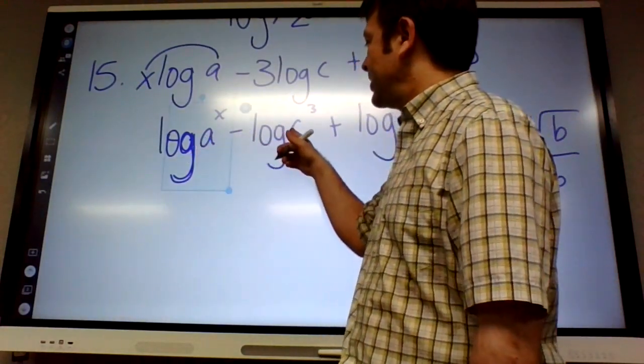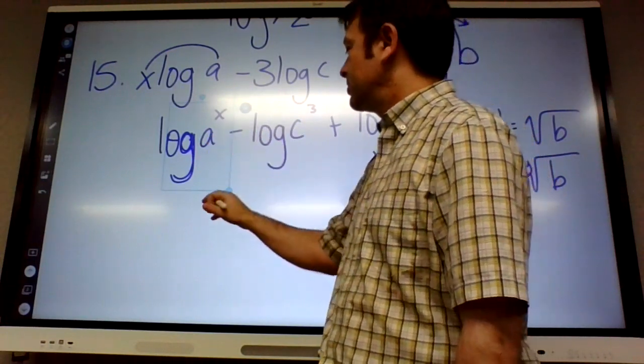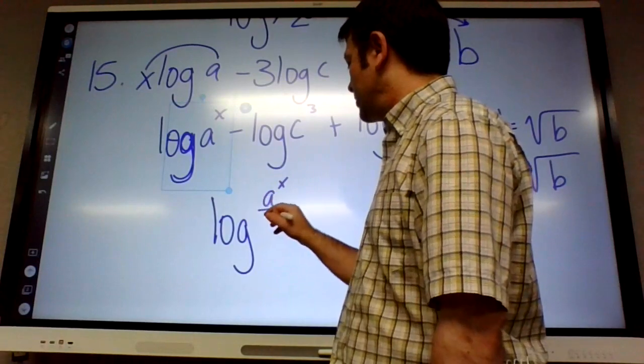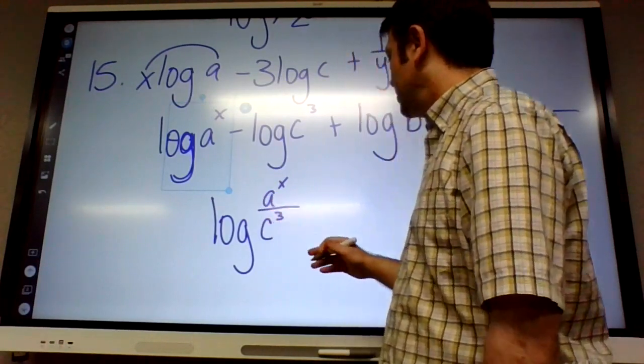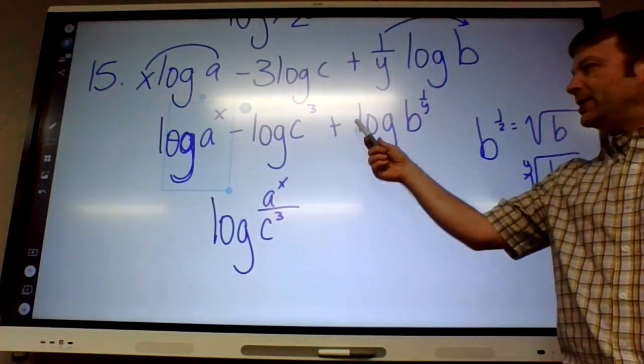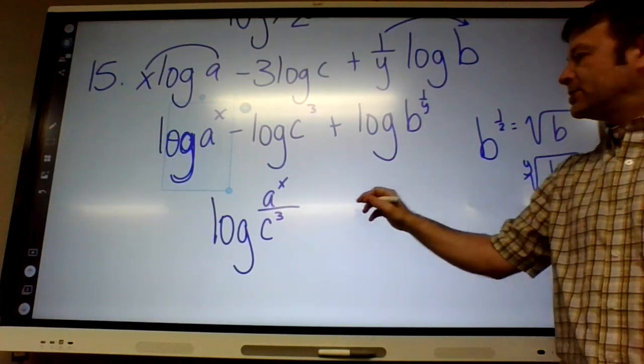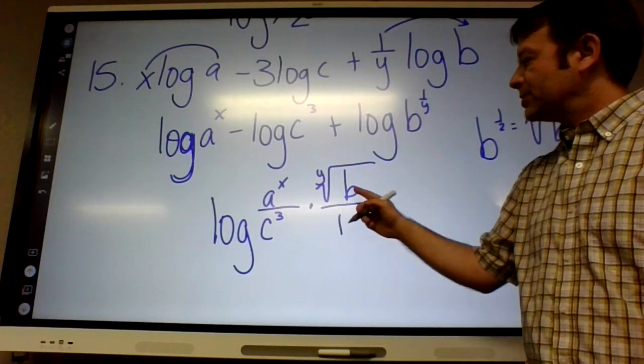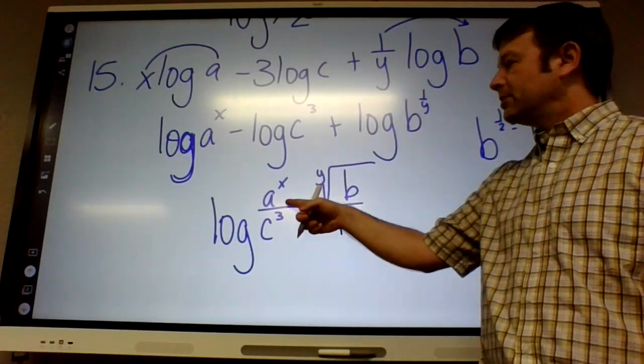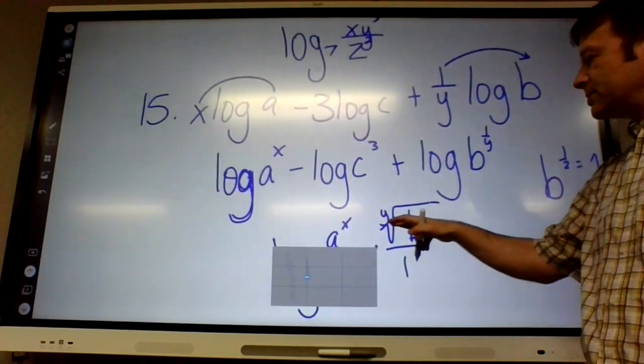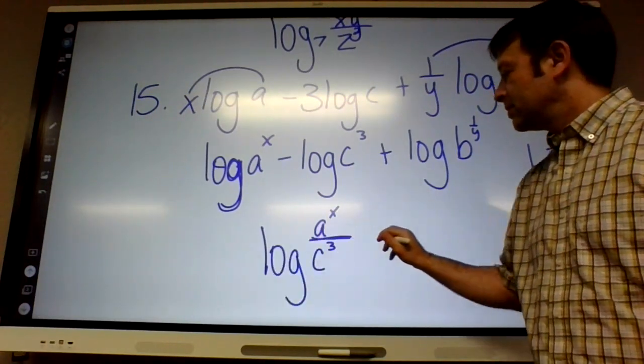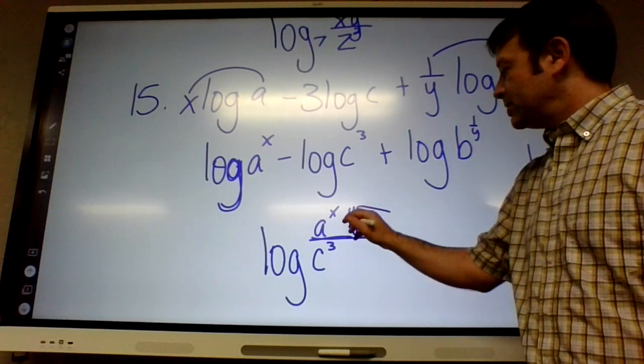These two are being subtracted. What does that mean? Divide. So a to the x over c cubed. And this is being added, so what does that mean? Multiply. So when you multiply, it's basically like this over 1, so it's just going to go on the top. And that's it. So the y root of b goes on top.